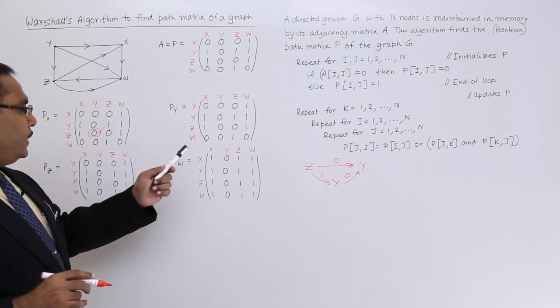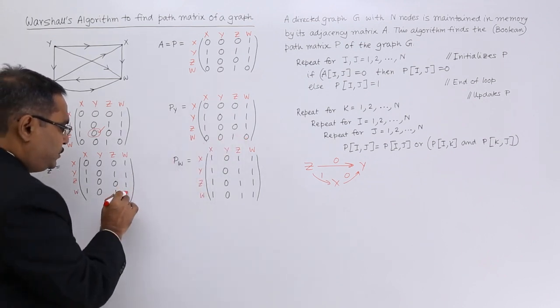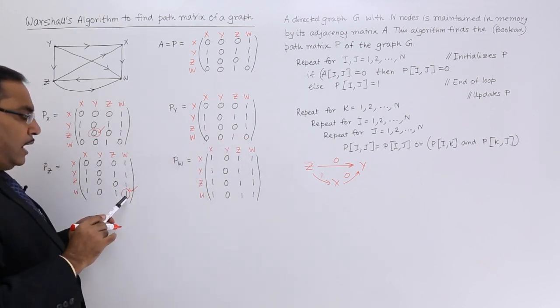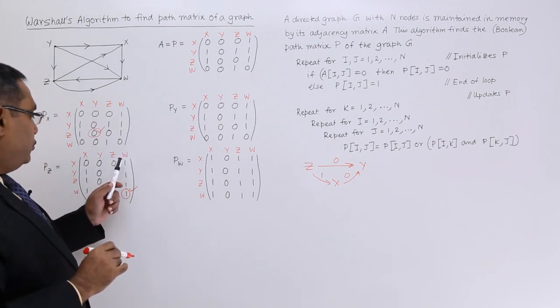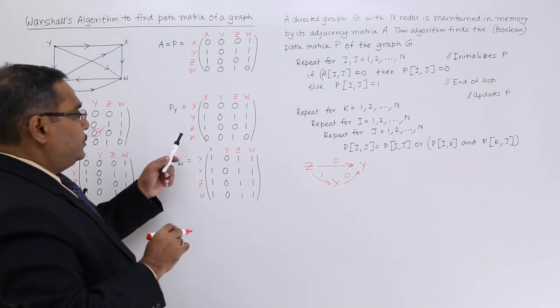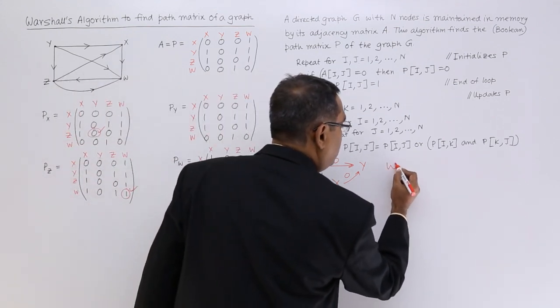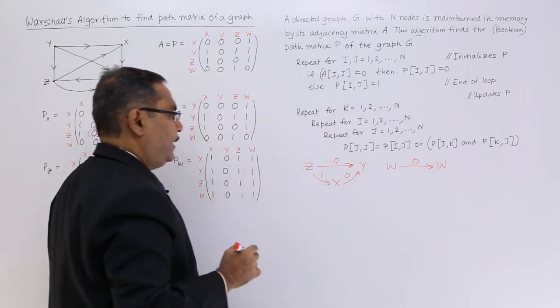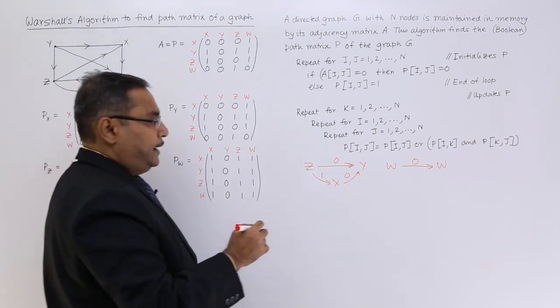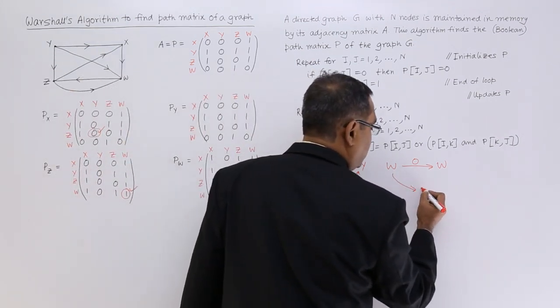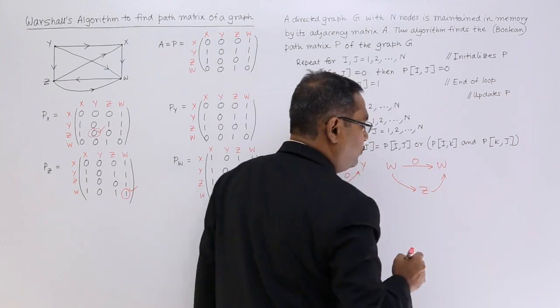Let us consider this one. I am observing one change here. I am considering this one - that is ww. From ww we are having no path. Now, what is the intermediate one? Here intermediate one is z. I am coming to w to z and z to w.